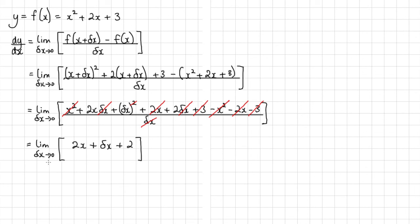Now we know that delta x tends to zero. So this term here will tend to zero as well. And what we're left with is 2x plus 2.